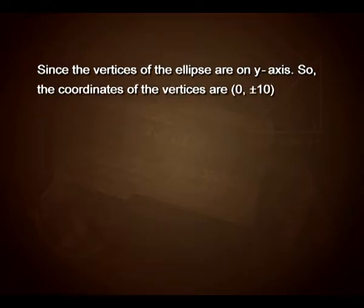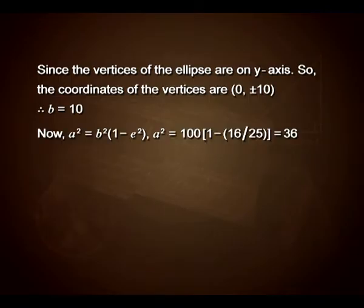Since the vertices of the ellipse are on the y-axis, the coordinates of vertices are 0 comma plus or minus 10. Therefore, b equals 10. Now, a² equals b² into 1 minus e². Therefore, a² equals 100 into 1 minus 16 upon 25, which on solving gives us the value 36.